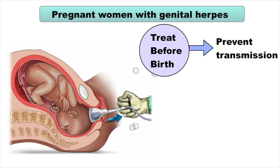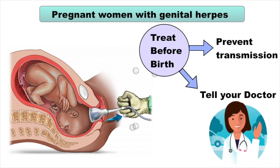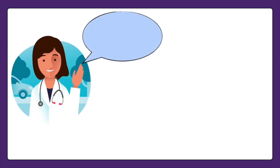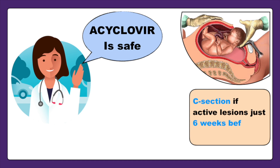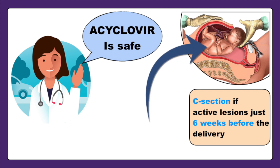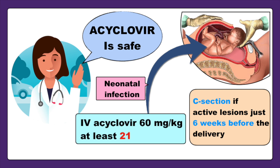If the baby catches the virus during birth or shortly thereafter, this can be fatal for the baby. So make sure your obstetrician knows that you have genital herpes so that necessary precautions can be taken. Acyclovir has been found to be perfectly safe during pregnancy with no side effects. It is often recommended to plan a C-section if you have primary active lesions just 6 weeks before delivery. In cases of neonatal infection, IV acyclovir 60mg per kg is used for at least 21 days.